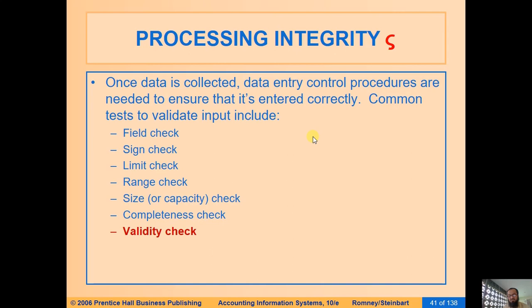The validity check verifies that data is valid against a predefined list of values. For example, if you enter a date, the system checks it against the calendar — entering 30th February or 31st April will be rejected as invalid dates. Similarly, in FB50, if you enter an account number not present in your chart of accounts, the system will pop up an error.